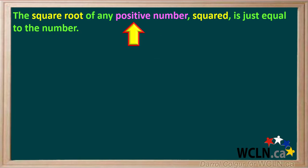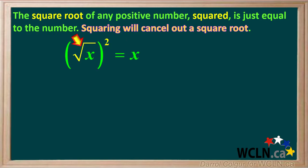Just a note: when we mention the square root of a number, the number must either be 0 or a positive number. The square root of a negative number is not a real number. Using the variable x to represent any positive number, the square root of x, squared, is just equal to x.